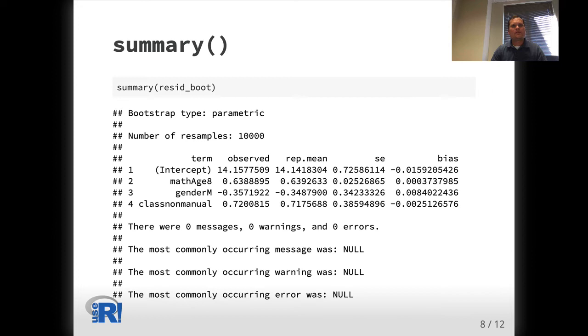Bootstrap returns an object of class LME_resamp, and we've provided familiar methods to explore the results. For example, the summary function allows us to quickly explore the means, standard error, and bias of our results. It also informs us of any warnings encountered along the way, such as convergence issues. Here, we see that we have no messages, warnings, or errors.